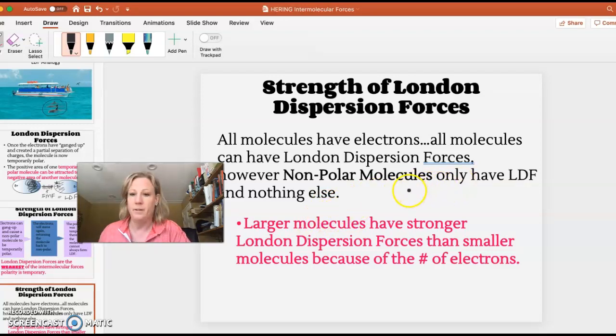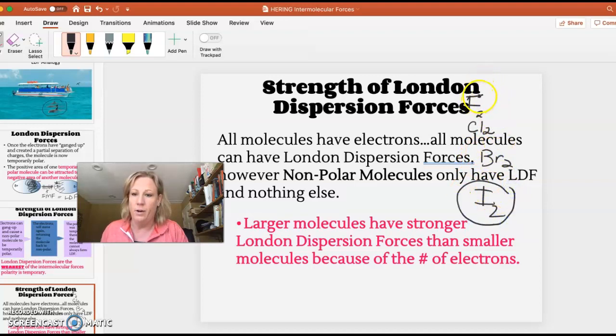Example of this: if you look at the periodic table in the group with the halogens, like you have fluorine and chlorine, bromine, and iodine. Remember those guys are diatomic. This iodine is bigger than this fluorine.